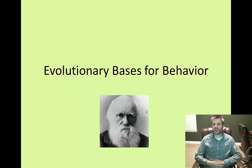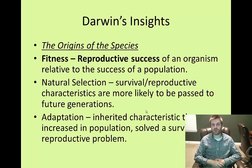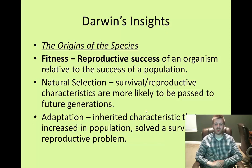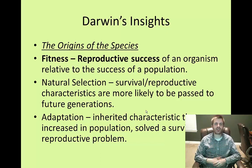Finally, we'll look at the evolutionary basis for behavior. The main evolutionary figure that impacts AP psychology is by far Charles Darwin. Darwin published a famous book, On the Origin of Species, in which he documented findings about the finches he observed all along the South American coast. Darwin's main ideas are related to fitness and reproductive success, and natural selection. The basic idea of reproductive success is an organism's success relative to the population in terms of reproducing offspring.